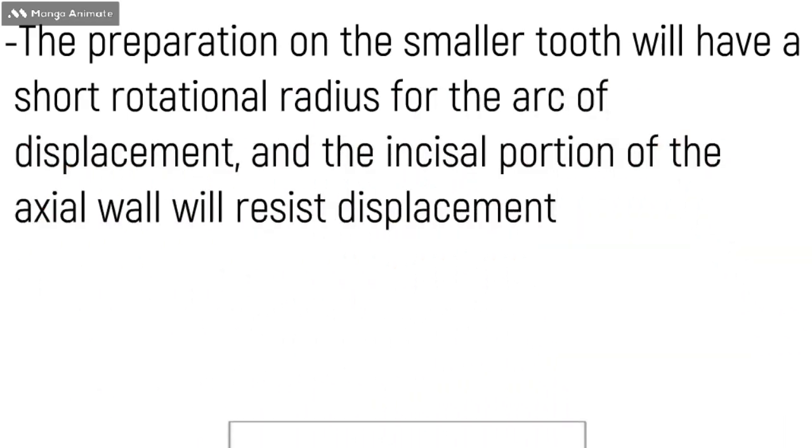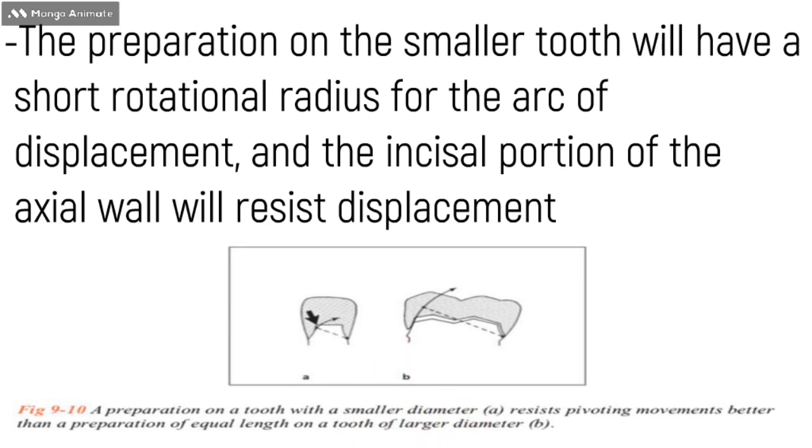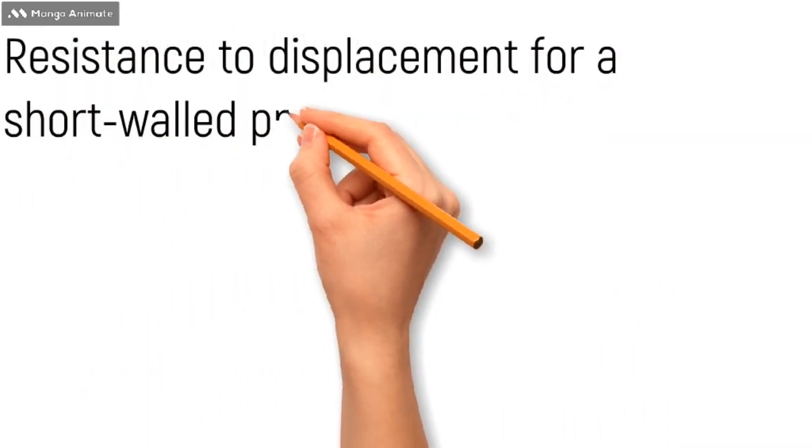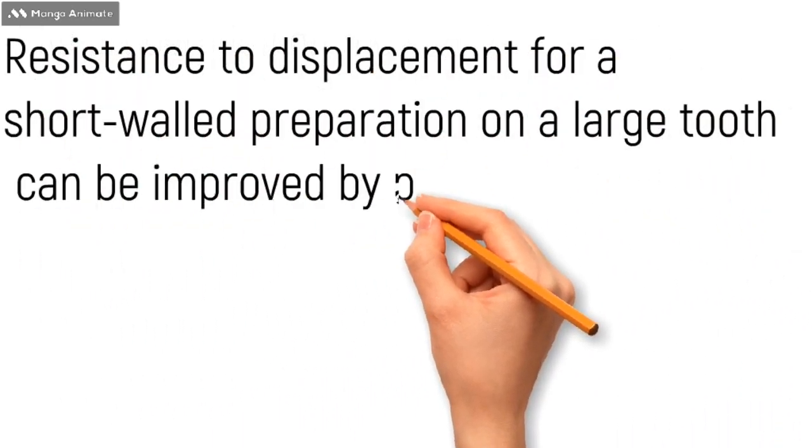As you can see in this figure, a preparation on a tooth with a smaller diameter, which is in A, resists the pivoting movements better than a preparation of equal length in B because of the size of the teeth.